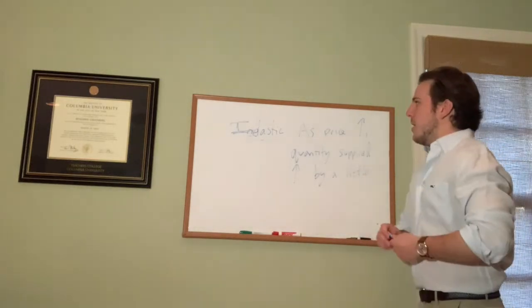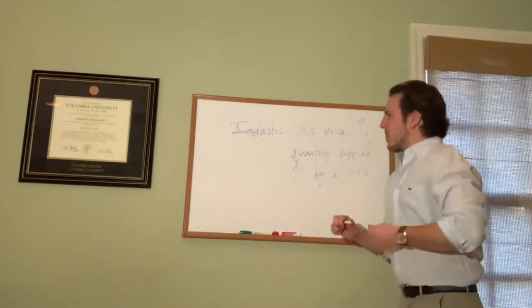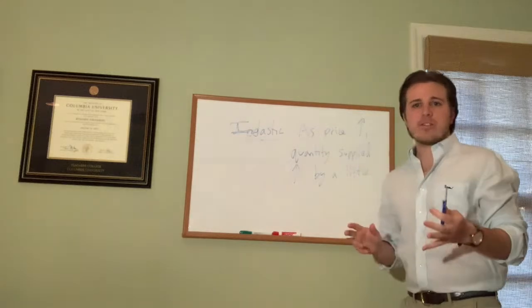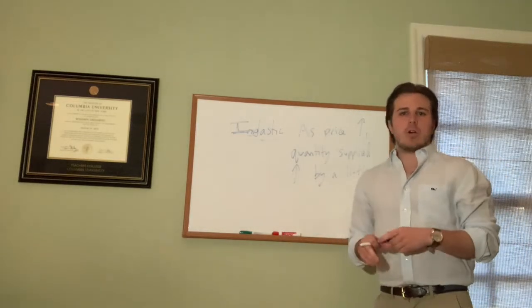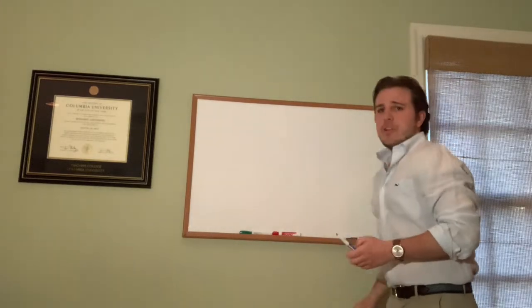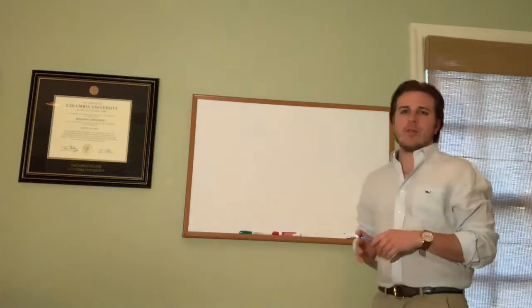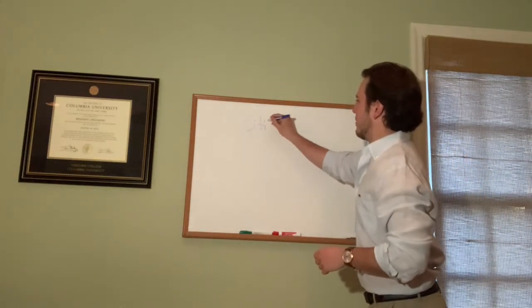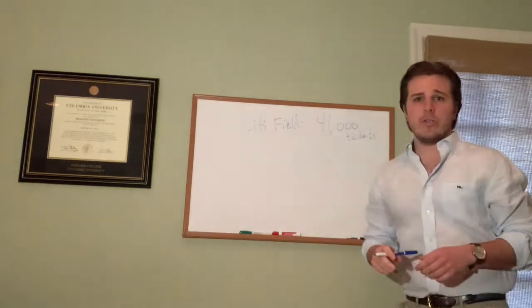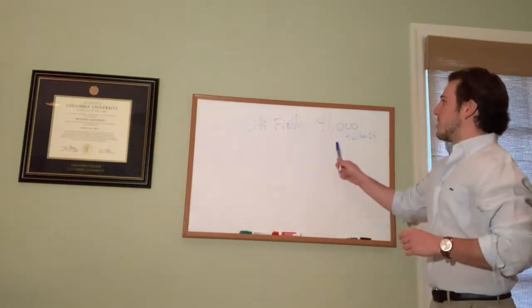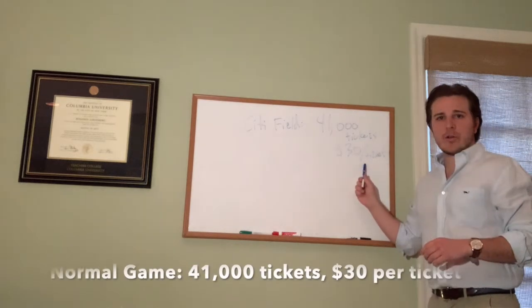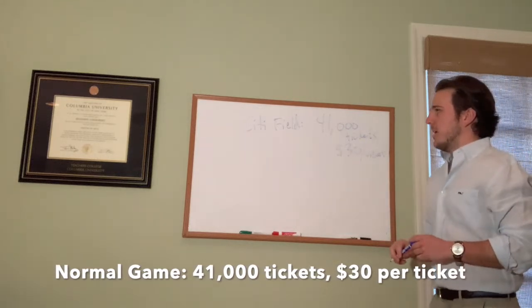This one's a little trickier to understand, so I'm going to give you an example. Let's take the New York Mets, for example. The New York Mets are a baseball team. They play in Queens and they have a stadium called Citi Field. Citi Field seats 41,000 tickets - that's how many can be sold. On an average night in Queens, the Mets sell each ticket for about $30 per ticket.